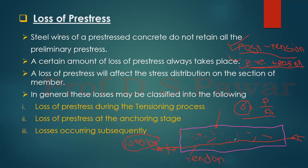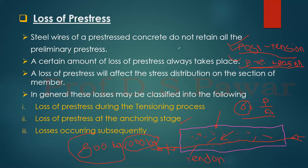Whether it is pre-tensioning or post-tensioning, when the concrete and tendon come into contact, friction, elastic shortening, creep of concrete, and relaxation of steel — all these things are going to affect the stress. We need to understand those stages and calculate how much actual force is applied on the beam. If there is a 20% loss, then only 800 kN is applied, and for that 800 kN we design the pre-stressed beam.